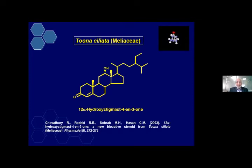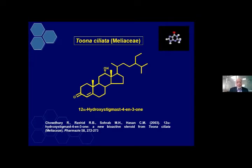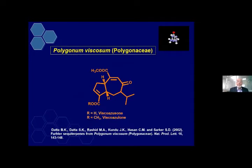Then Tuna ciliata — this is 12-hydroxystigmasterone, again a steroid. It has a hydroxy group at the 12-alpha position, which is uncommon, and published in Pharmazie. Then Polygonum bispasum, Polygonaceae family — we published this in Natural Product Letters. This is sesquiterpene — sesquiterpene means 15 carbons.